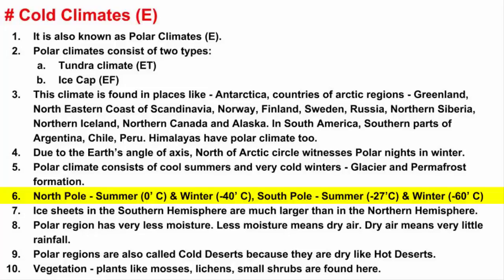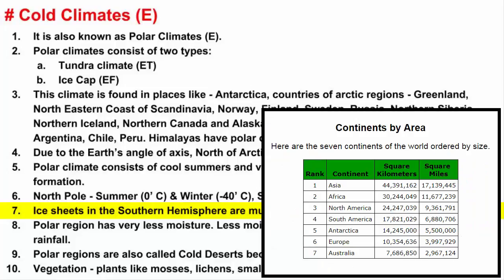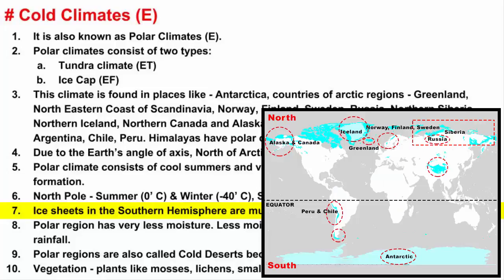These places are so cold that when snow falls, it does not melt. It gradually accumulates over hundreds and thousands of years to make thick ice sheets called permafrost. The ice sheets in the southern hemisphere are much larger than in the northern hemisphere, covering the entire continent of Antarctica, which is the 5th largest of the 7 continents. Therefore, the southern hemisphere has more ice sheet compared to the northern hemisphere.